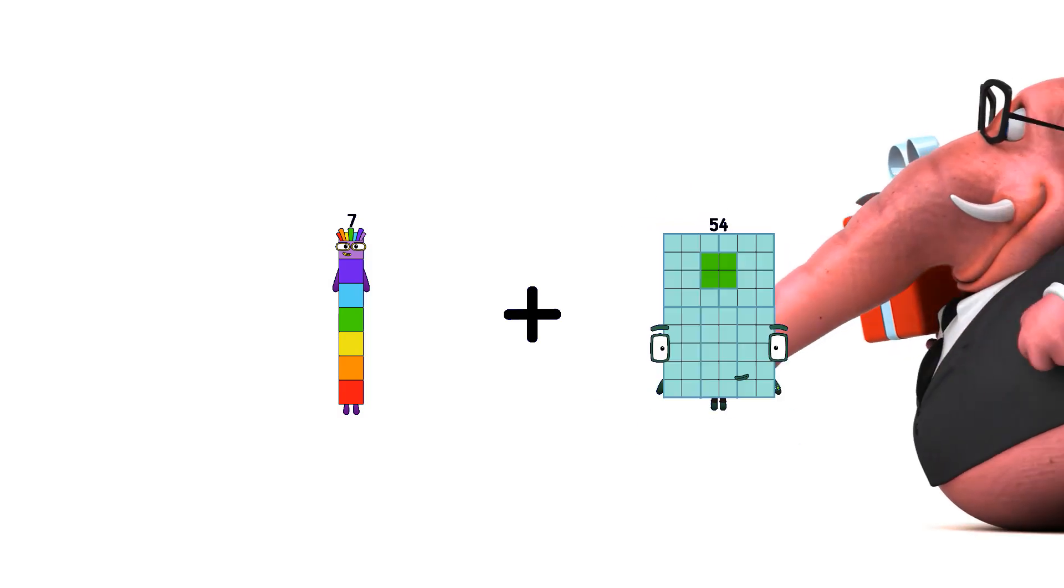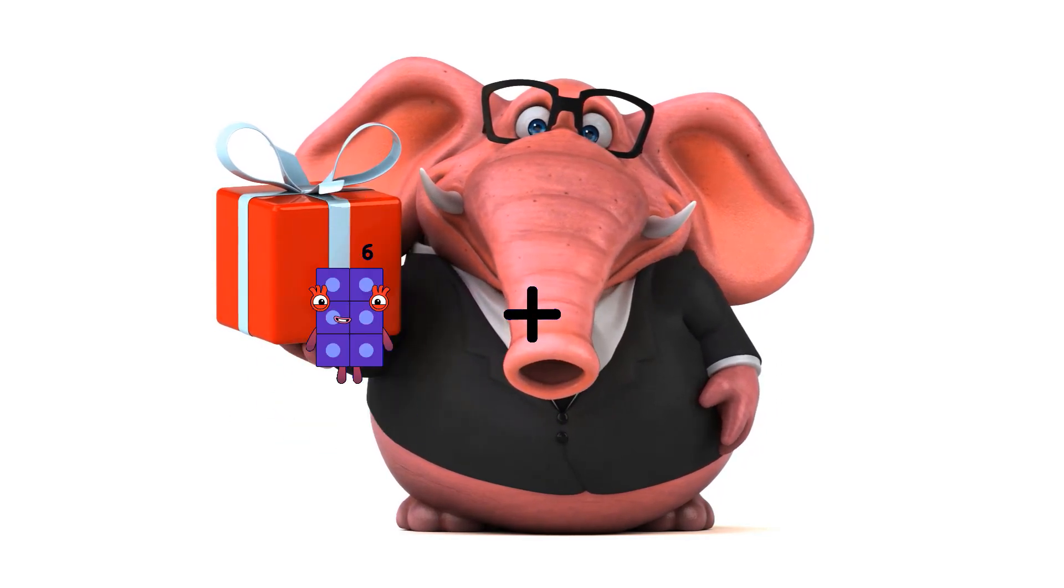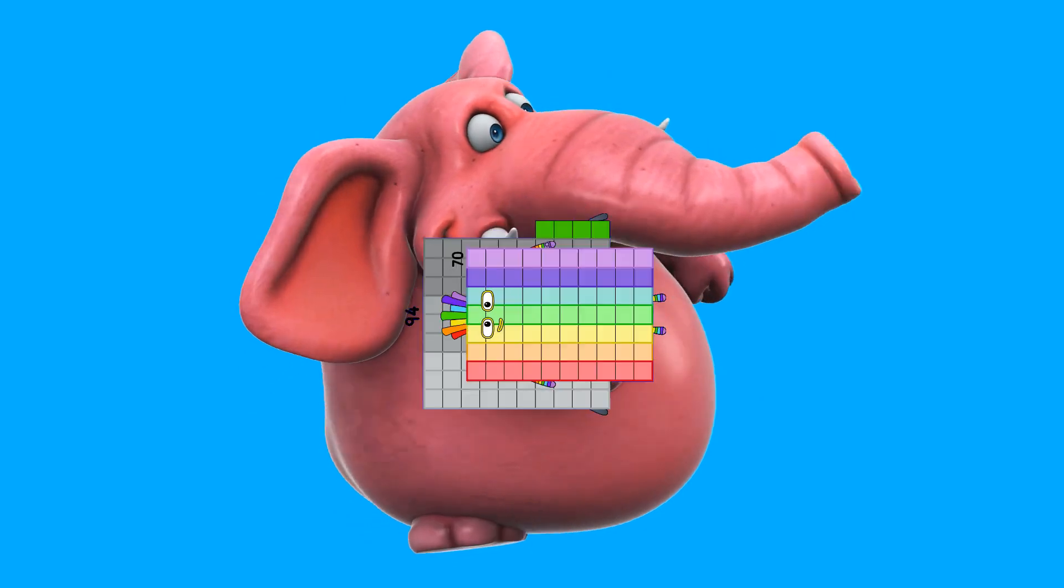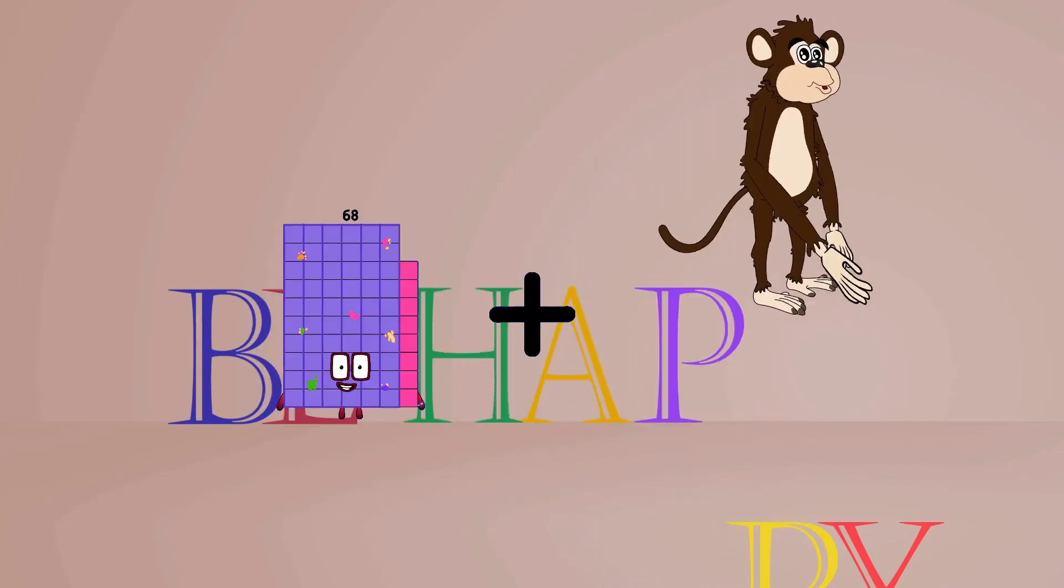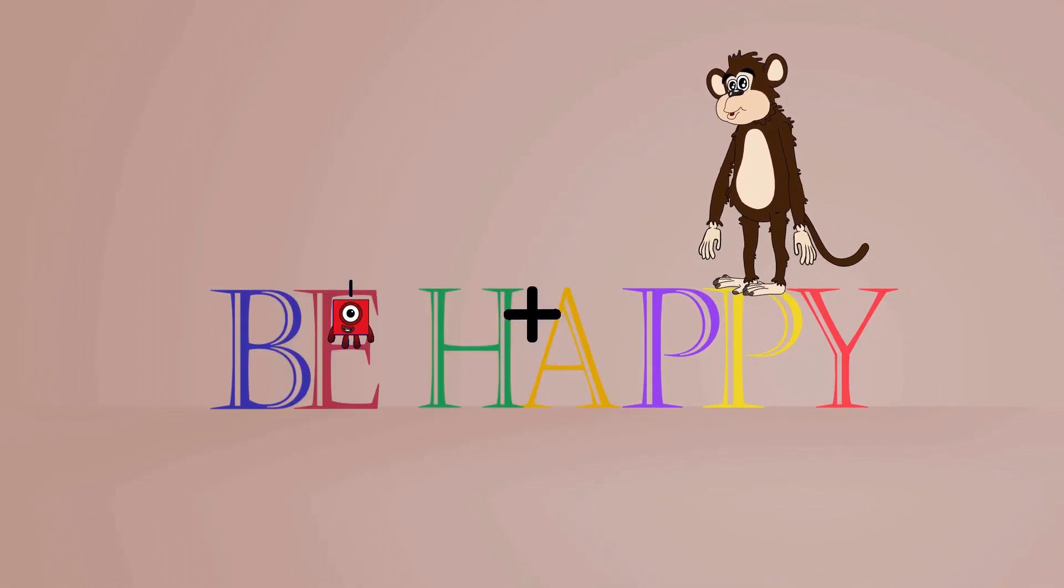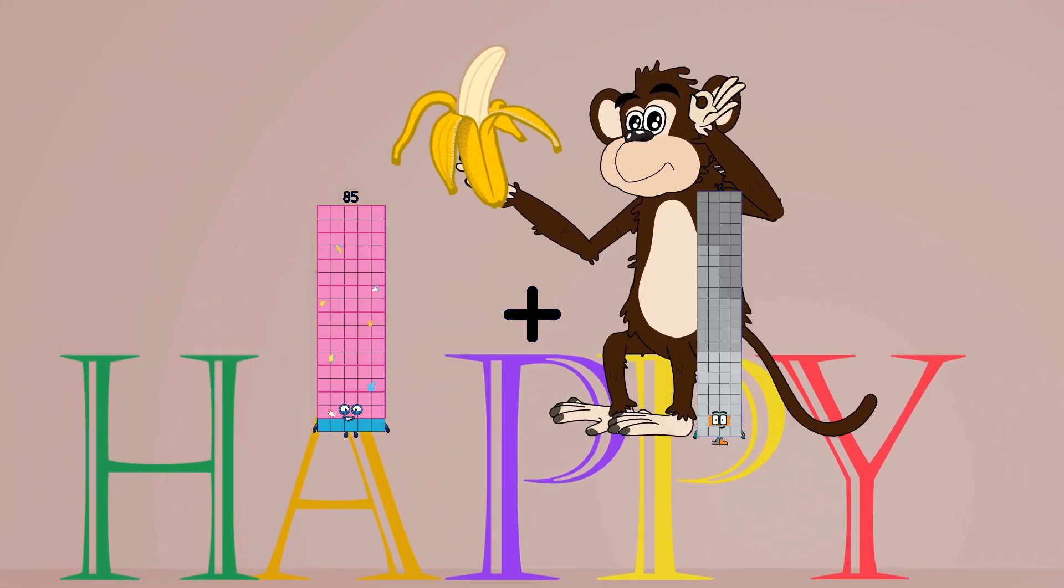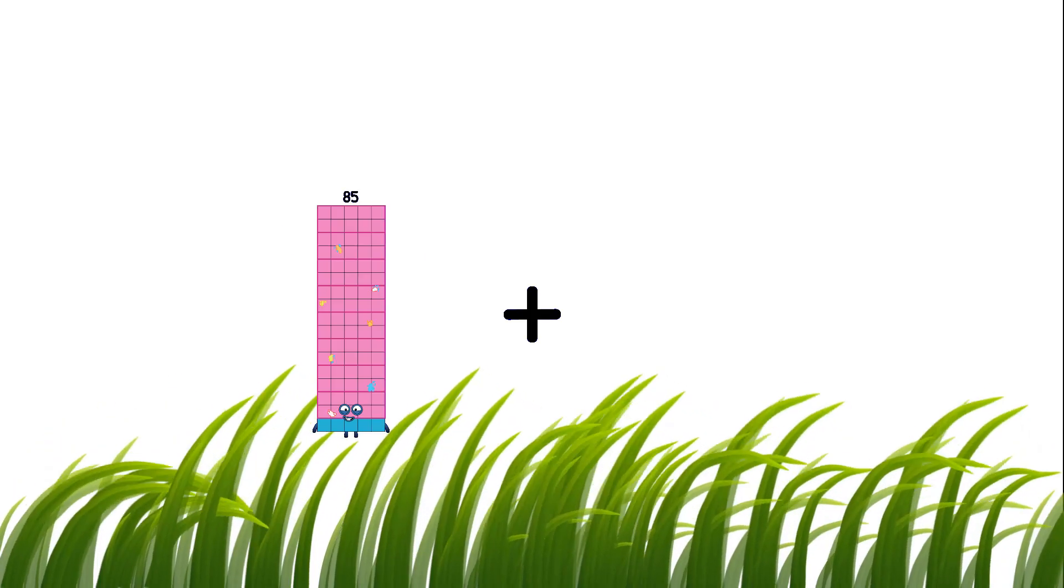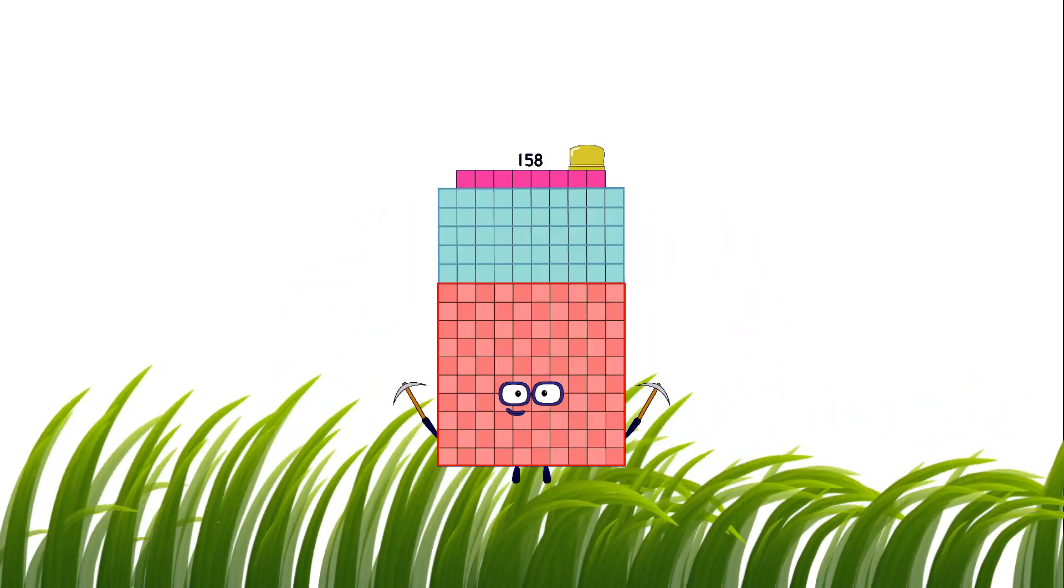7 plus 41 equals 48. 94 plus 70 equals 164. 68 plus 18 equals 86. 85 plus 85 equals 170. 85 plus 73 equals 158.